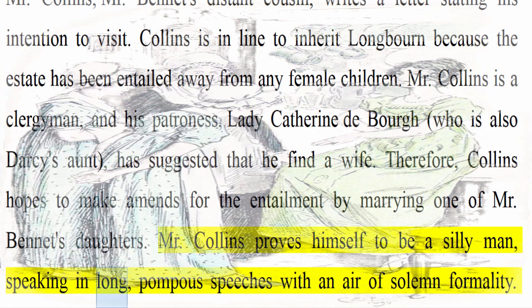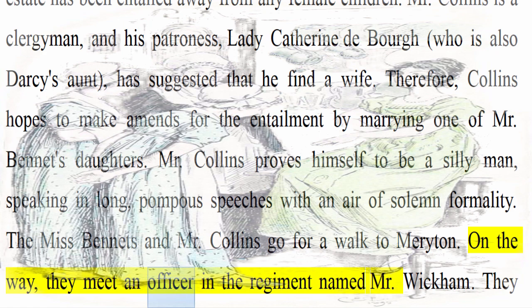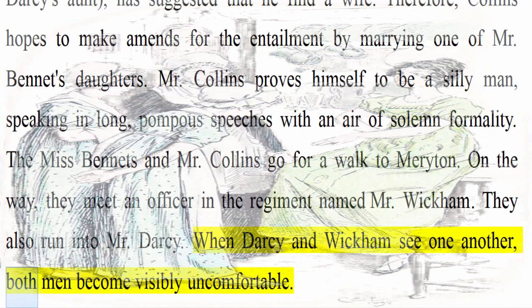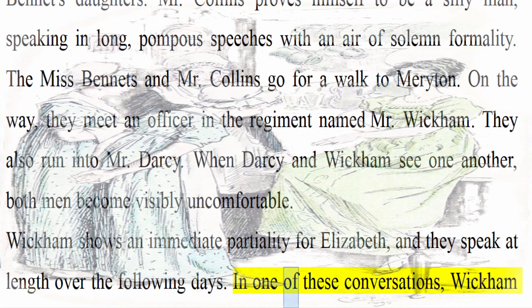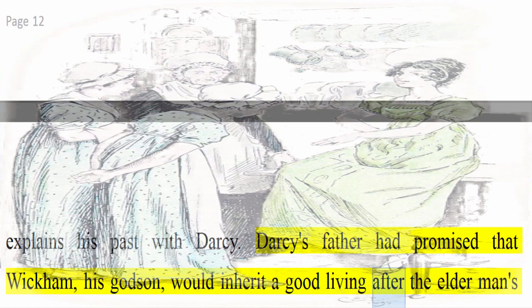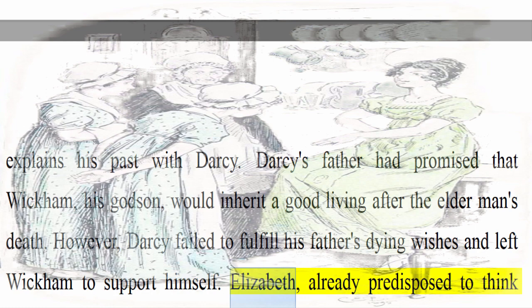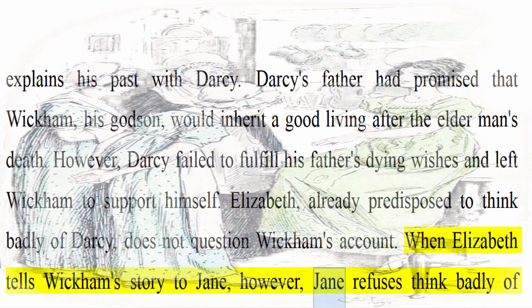The Miss Bennets and Mr. Collins go for a walk to Meryton. On the way, they meet an officer in the regiment named Mr. Wickham. They also run into Mr. Darcy. When Darcy and Wickham see one another, both men become visibly uncomfortable. Wickham shows an immediate partiality for Elizabeth, and they speak at length over the following days. Wickham explains his past with Darcy: Darcy's father had promised that Wickham, his godson, would inherit a good living after the elder man's death. However, Darcy failed to fulfill his father's dying wishes and left Wickham to support himself. Elizabeth, already predisposed to think badly of Darcy, does not question Wickham's account. When Elizabeth tells Wickham's story to Jane, however, Jane refuses to think badly of either Wickham or Darcy, insisting that there must be some misunderstanding.